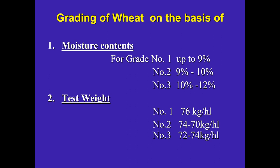The basis of wheat grading uses three grades — Grade 1, Grade 2, and Grade 3 — across different criteria. For moisture content, Grade 1 is up to 9%, Grade 2 is between 9 and 10%, and Grade 3 is more than 10%. For test weight, Grade 1 should be 76 kg per hectolitre, Grade 2 should be 74 to 76 kg per hectolitre, and Grade 3 should be 72 to 74 kg per hectolitre.